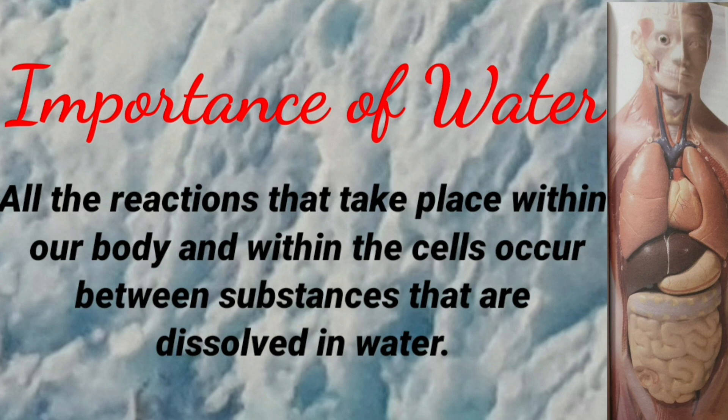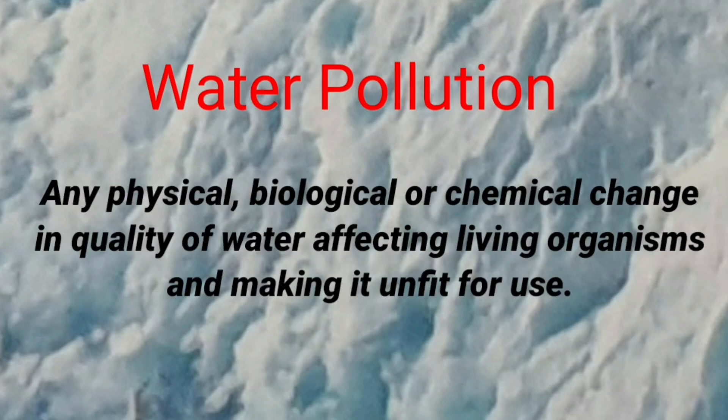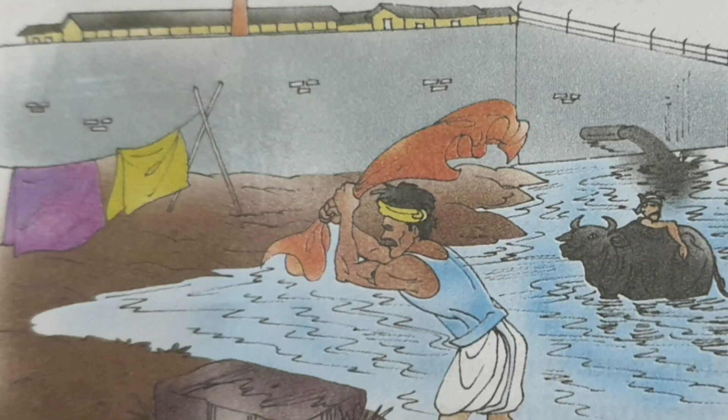What do we mean by water pollution? It is defined as an undesirable change in the physical, chemical, and biological quality of water due to the addition of unwanted and harmful substances. These unwanted and harmful substances are called water pollutants. Water pollution adversely affects living organisms by making the water unsuitable for use.